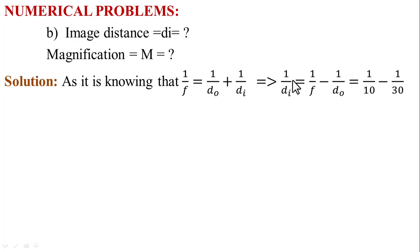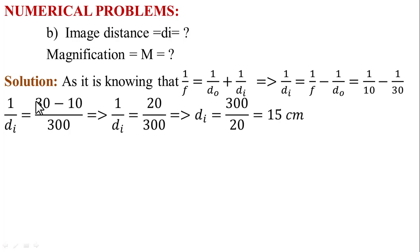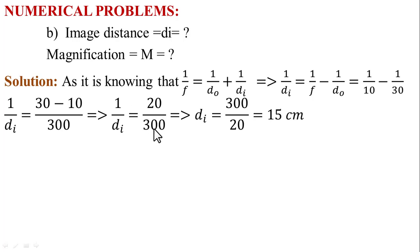Putting the values: 1/Dᵢ = 1/10 − 1/30. Taking the LCM: 1/Dᵢ = (30 − 10) / (10 × 30) = 20/300. Taking the reciprocal on both sides: Dᵢ = 300/20 = 15 cm.